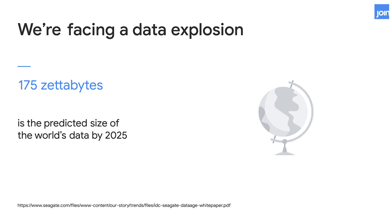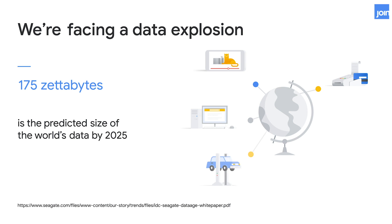Where's all that data coming from? You have the more traditional data — the server logs, ad logs, cat videos. Then we've had the growth of new types of retail data. It's not just transactions in stores anymore. And then we're getting to the even crazier side with IoT, manufacturing lines — even washing machines are connected to the internet.